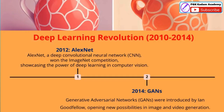The 2010–2014 period marked a deep learning revolution in computer vision. In 2012, AlexNet, a deep convolutional neural network, won the ImageNet competition, demonstrating the power of deep learning for image recognition tasks. This was a breakthrough moment, showcasing how deep learning could outperform traditional computer vision approaches. A couple of years later, in 2014, Generative Adversarial Networks (GANs) were introduced by Ian Goodfellow. GANs opened up new possibilities in image and video generation, expanding the applications of deep learning. This period laid the groundwork for the widespread adoption of deep learning techniques across many domains.